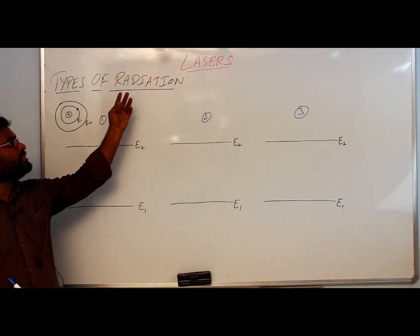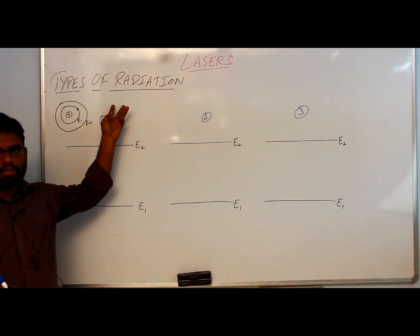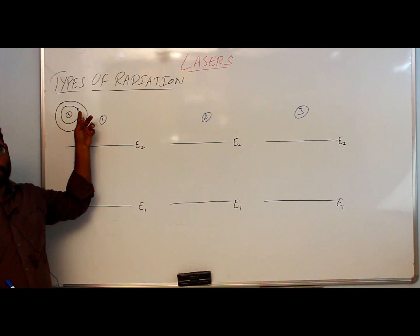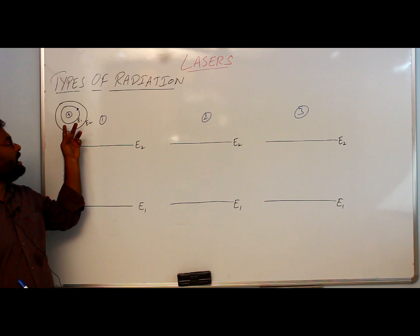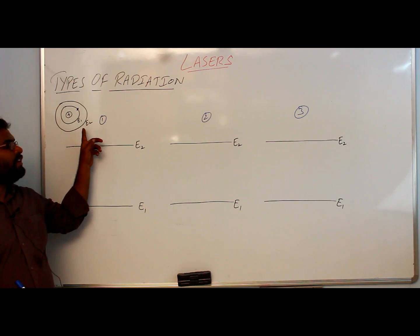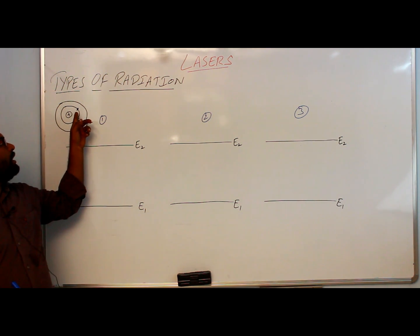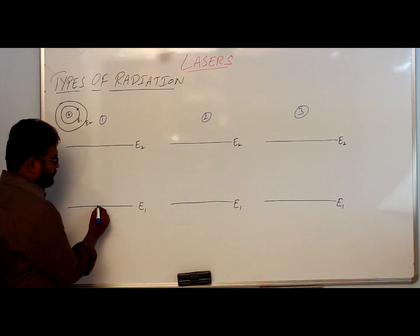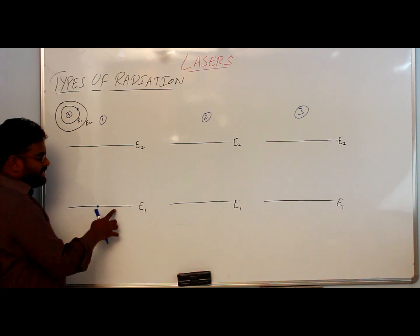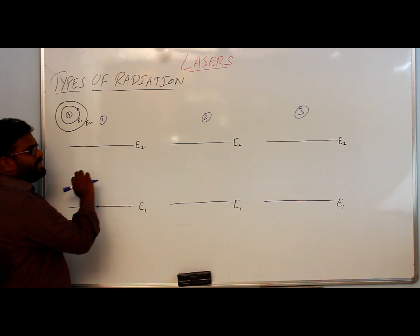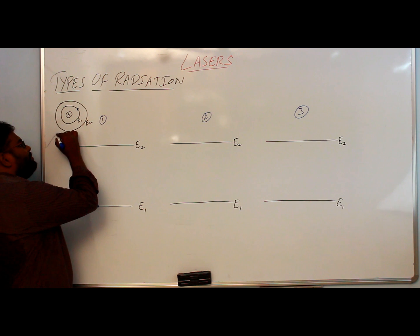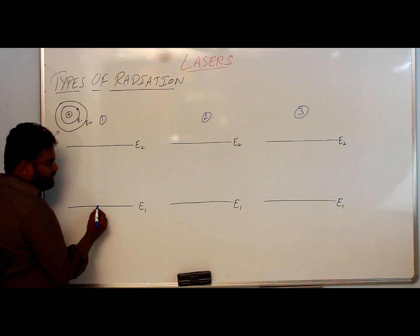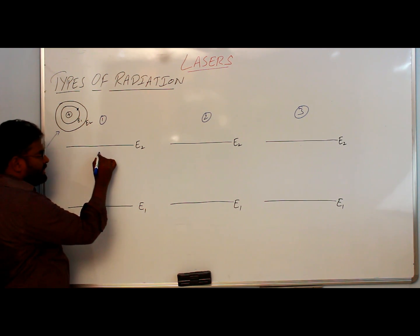Now we will discuss the types of radiations. Consider an atom with two energy levels, E1 and E2. Assume E1 has an electron — that means we have an electron in the ground state. E1 is considered the ground state and E2 the excited state. If we supply energy to this atom, the electron in the ground state will absorb the energy and go to the excited state.